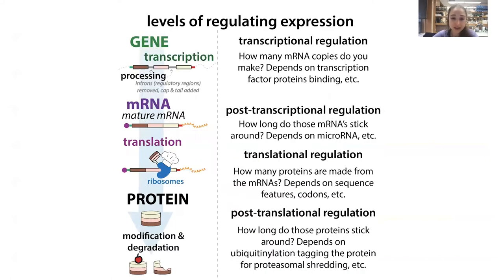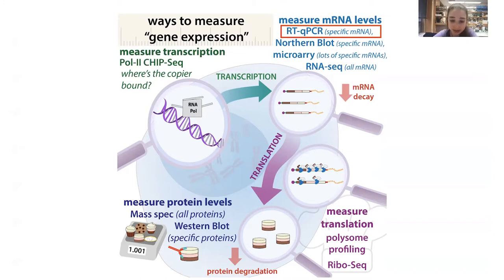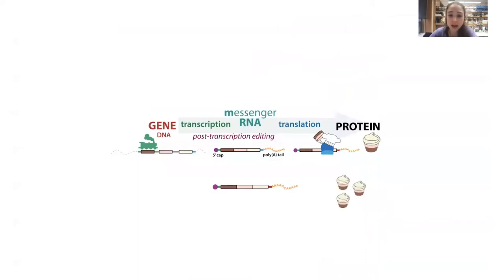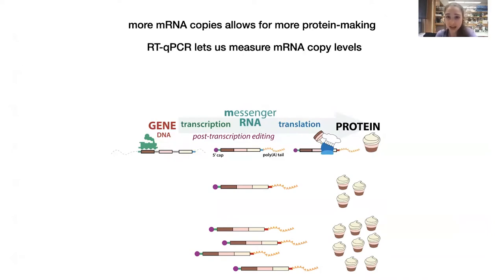There are various levels of regulation before and after the mRNA-making step, so this is just one way of studying gene expression. With RT-qPCR, we're looking for specific messenger RNAs — unlike RNA-seq which sequences all RNAs — and we're seeing how much of them there are. Because even for a highly expressed gene there's not enough mRNA to detect easily, we need to make a lot of copies in a detectable way.